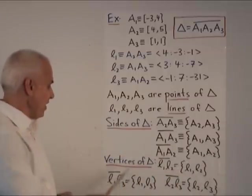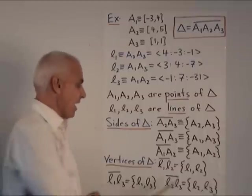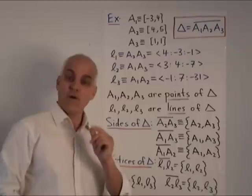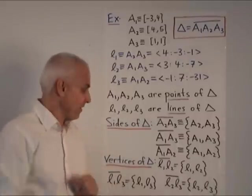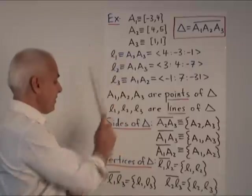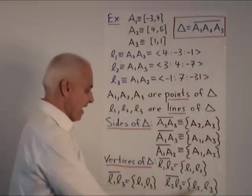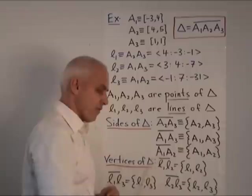In a corresponding way, the triangle has three vertices. A vertex is by definition a set consisting of two of the three lines of the triangle. So L1L2 bar, that's the set consisting of L1 and L2. L1L3, there's another vertex. L2L3, there's another vertex.